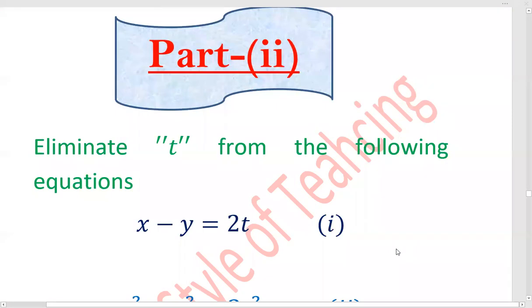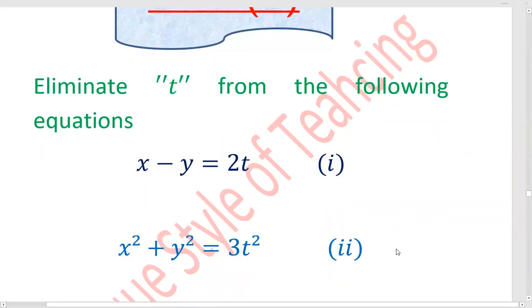Eliminate t from the following equations. First, x minus y is equal to 2t. And second is x square plus y square is equal to 3t square.